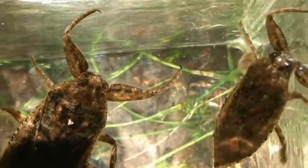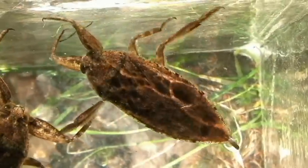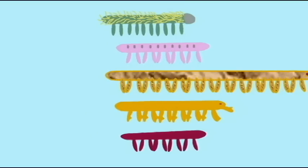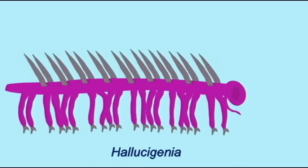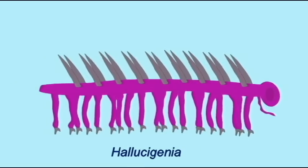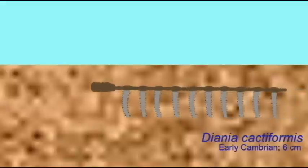If the evolutionary model is true, long before there were modern insects there were simpler forms — simpler insects — and then simpler other organisms from which insects evolved.